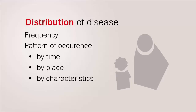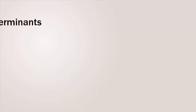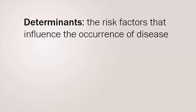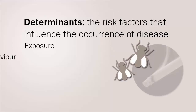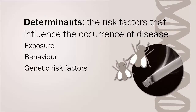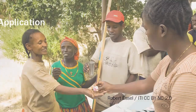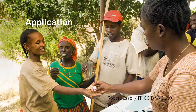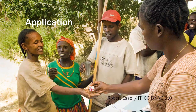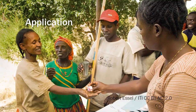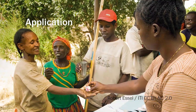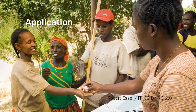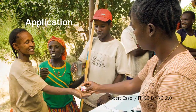Pattern can also be described by characteristics, for example, by age, gender, or ethnicity. Determinants are the risk factors or causes of occurrence of disease. These relate to exposure, behaviour, and genetic risk factors. Application is the public health action that can be taken to improve health within a population, also sometimes referred to as disease control strategies.